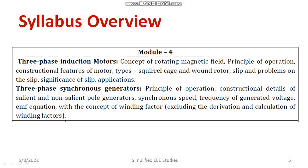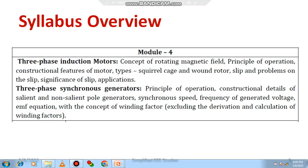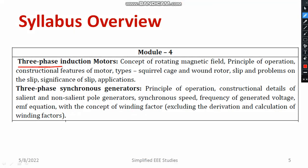Regarding module 4, you will be learning about AC machines. The first segment covers the three phase induction motor — the concept of rotating field, operation, slip, and the construction and working of the three phase induction motor. Regarding the three phase synchronous generator, also known as an alternator, you will learn how it works, its construction, salient pole and non-salient pole types, and the EMF equation.